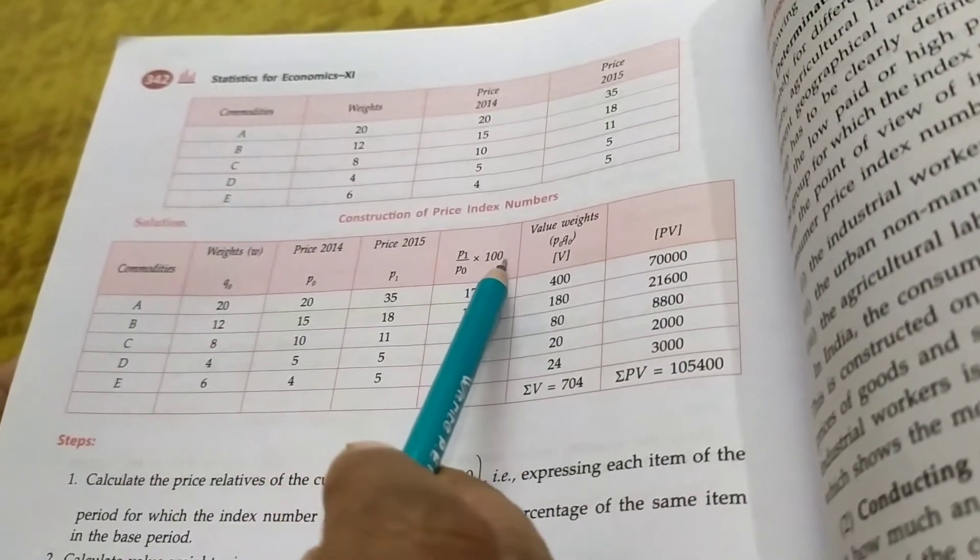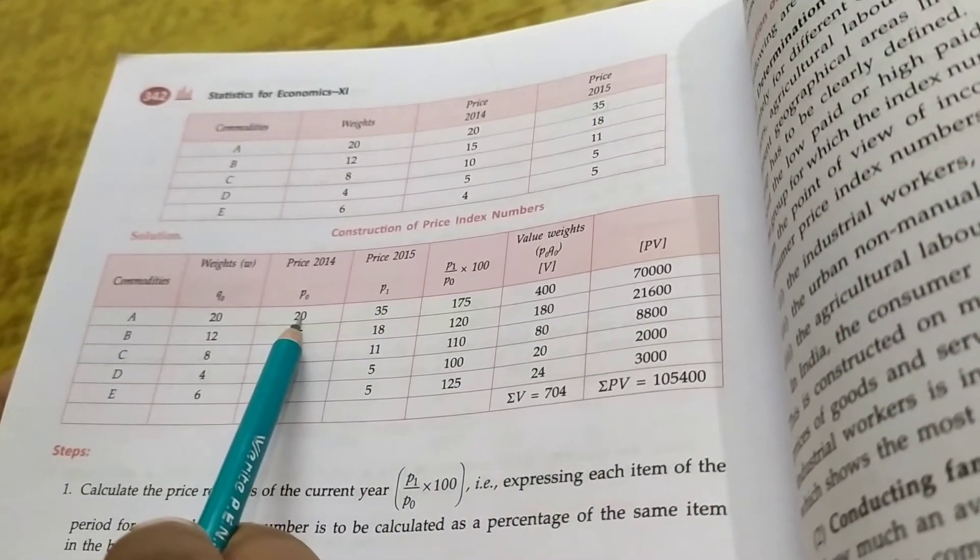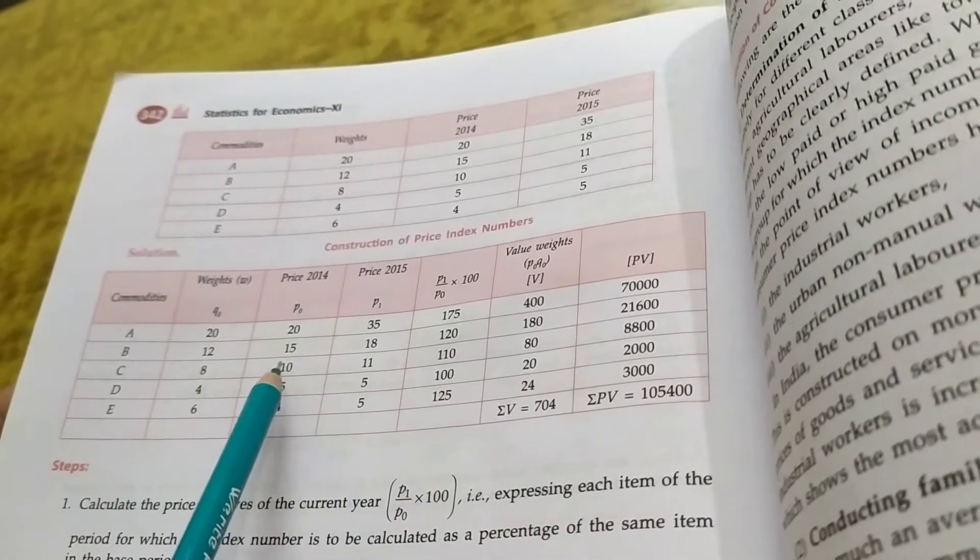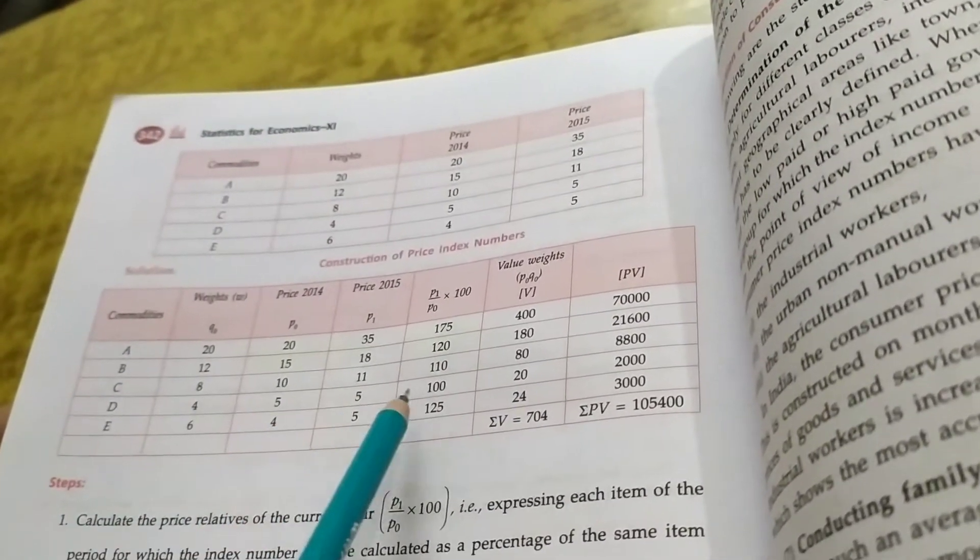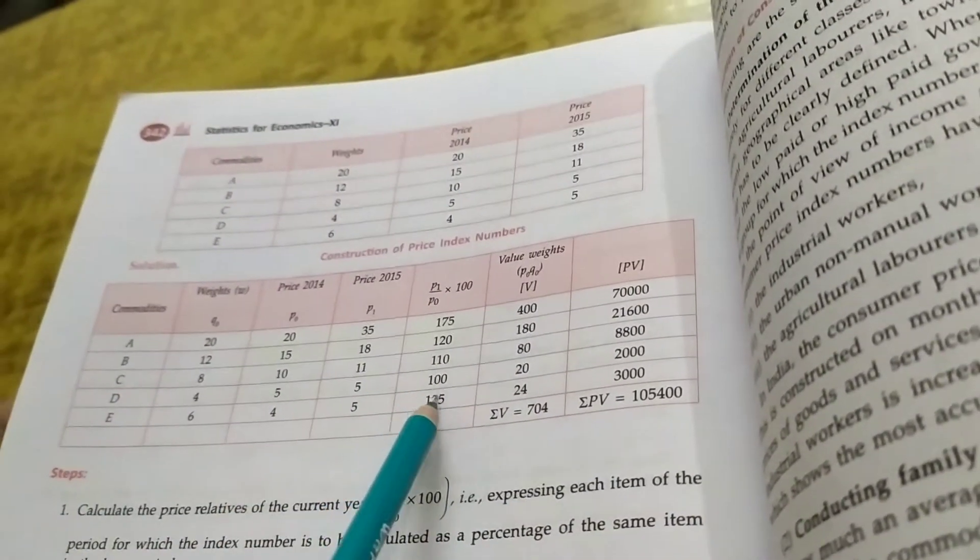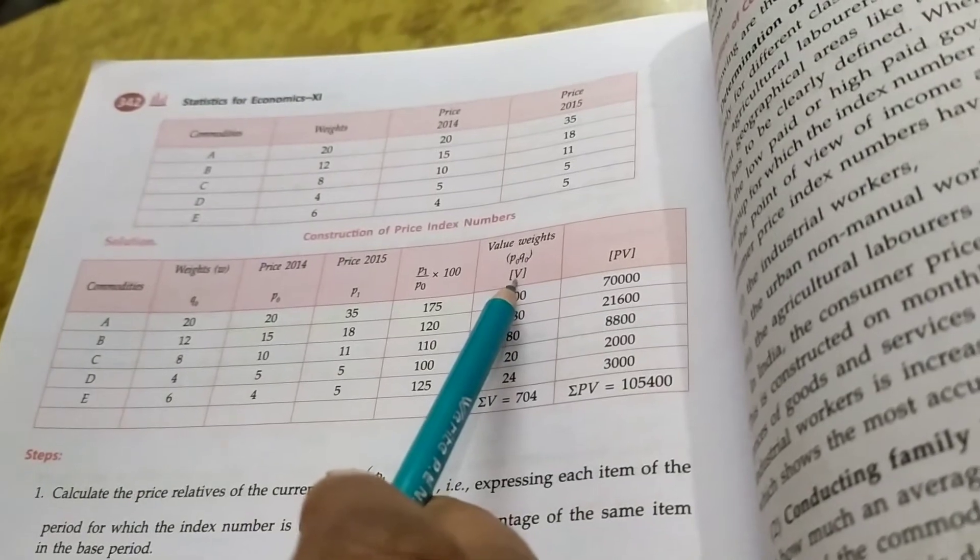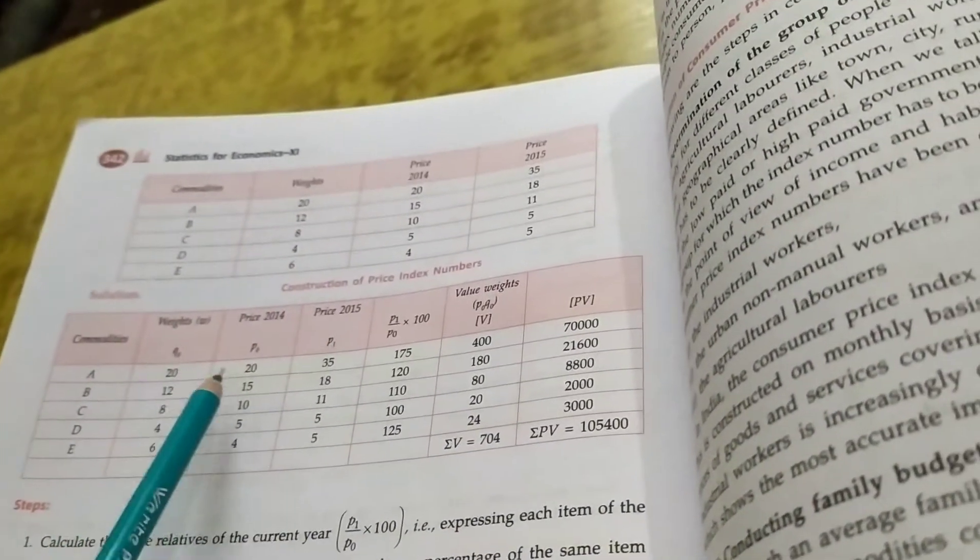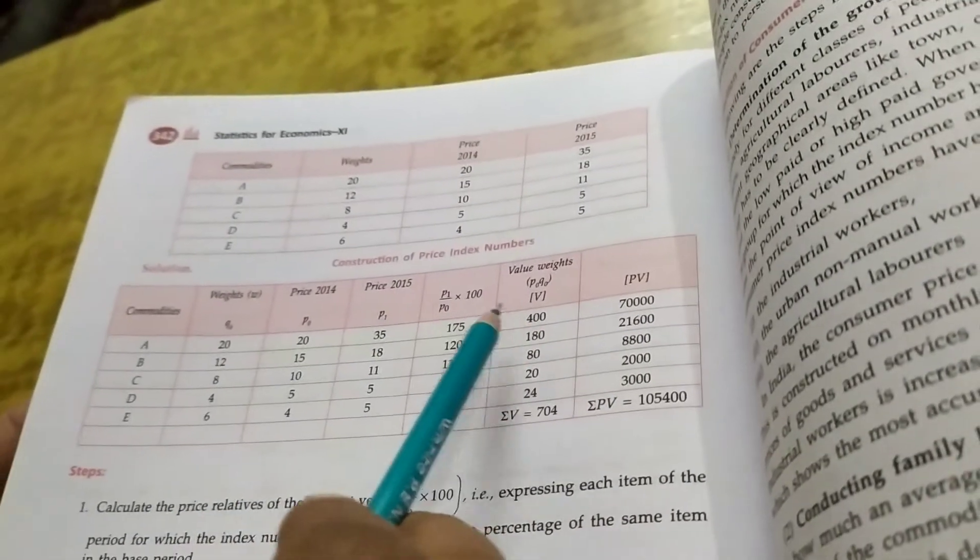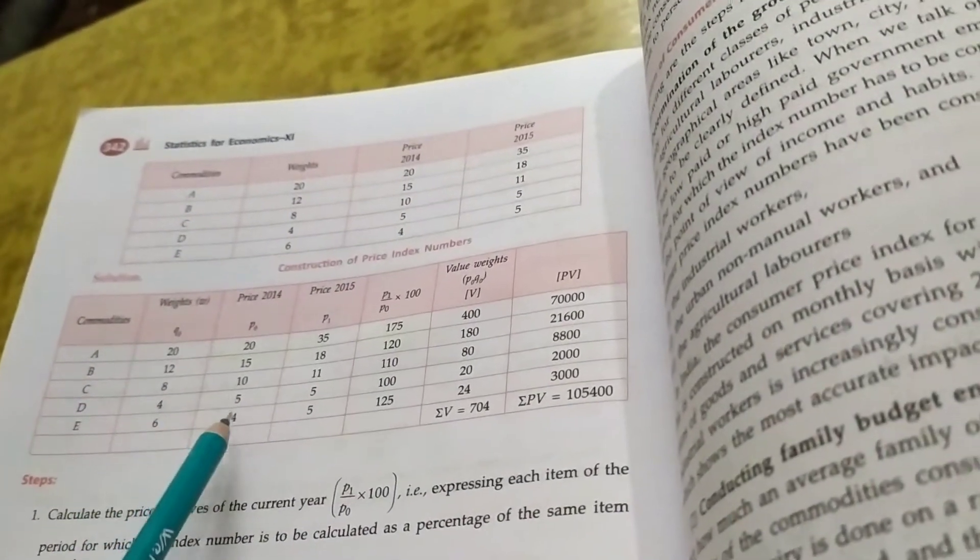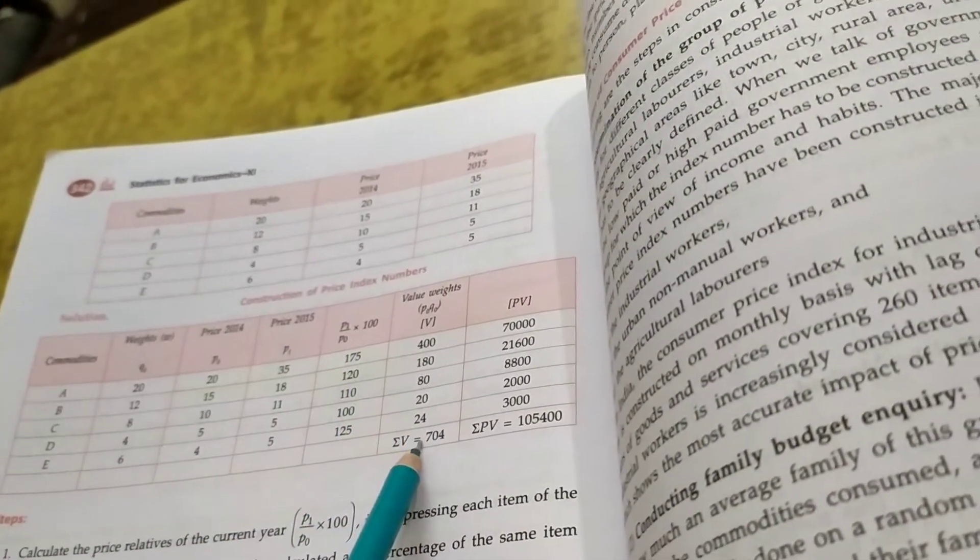Now I have to calculate P and V. P equal to P1 upon P0 into 100: 35 upon 20 into 100, 18 upon 15 into 100, 11 upon 10 into 100, 5 upon 5 into 100, so 100 is coming, 5 upon 4. So this is the value of P. Now students we have V equal to P0 Q0: 20 into 20 is 400, 15 into 12, 10 into 8, 5 into 4, 4 into 6.